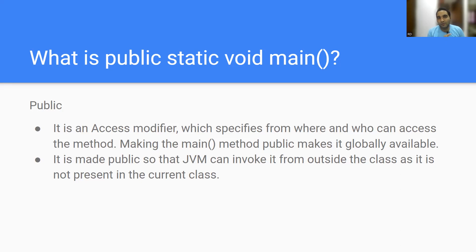Now what is the actual meaning of public static void main with respect to Java? The word public is an access modifier. We will look into access modifiers available in Java, but for now understand it specifies from where and who can access the method. For example, consider a home that is locked — only family members have the key and can enter. Access is given to those family members.